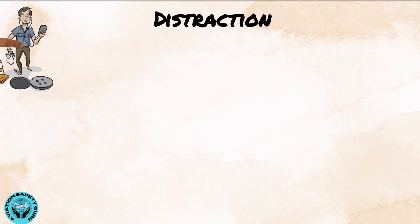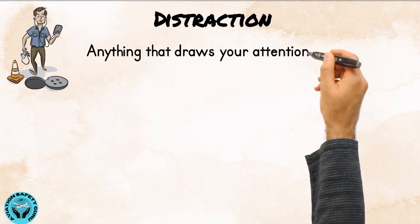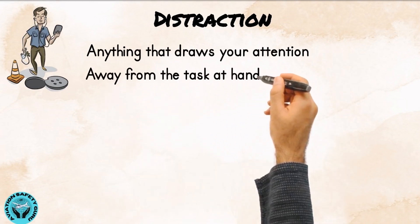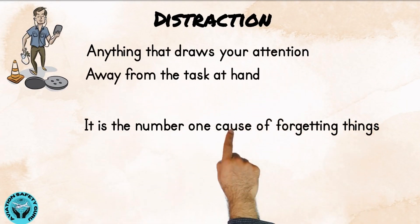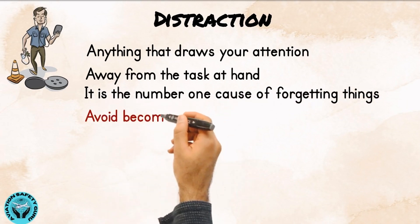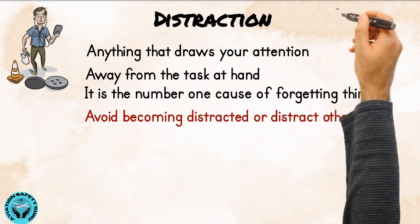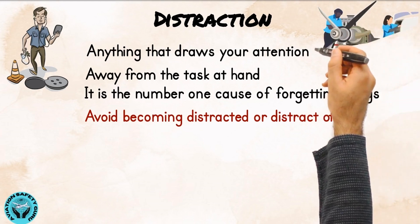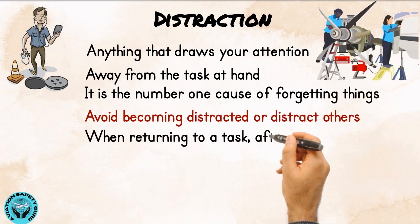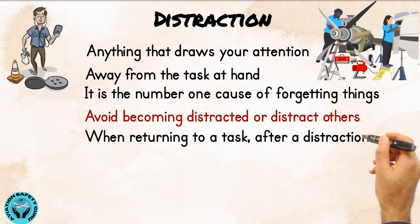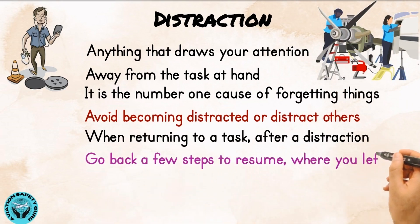Distraction could be anything that draws your attention away from the task at hand. It is the number one cause of forgetting things. Hence, avoid becoming distracted or distracting others. Remember, humans tend to think ahead, so when returning to a task after a distraction, go back a few steps to resume where you left off.